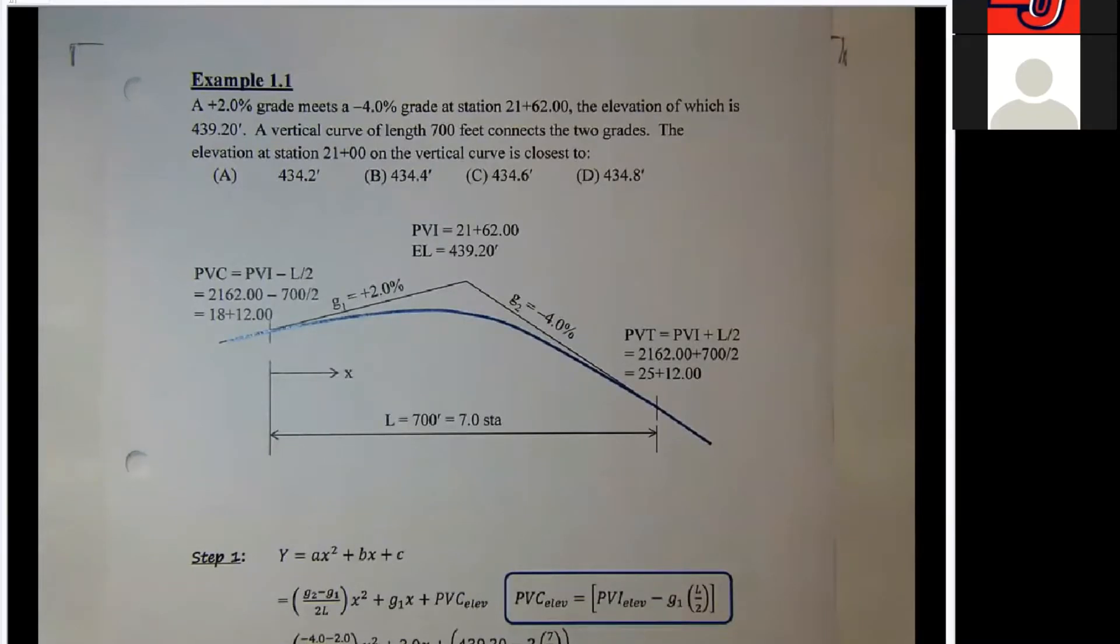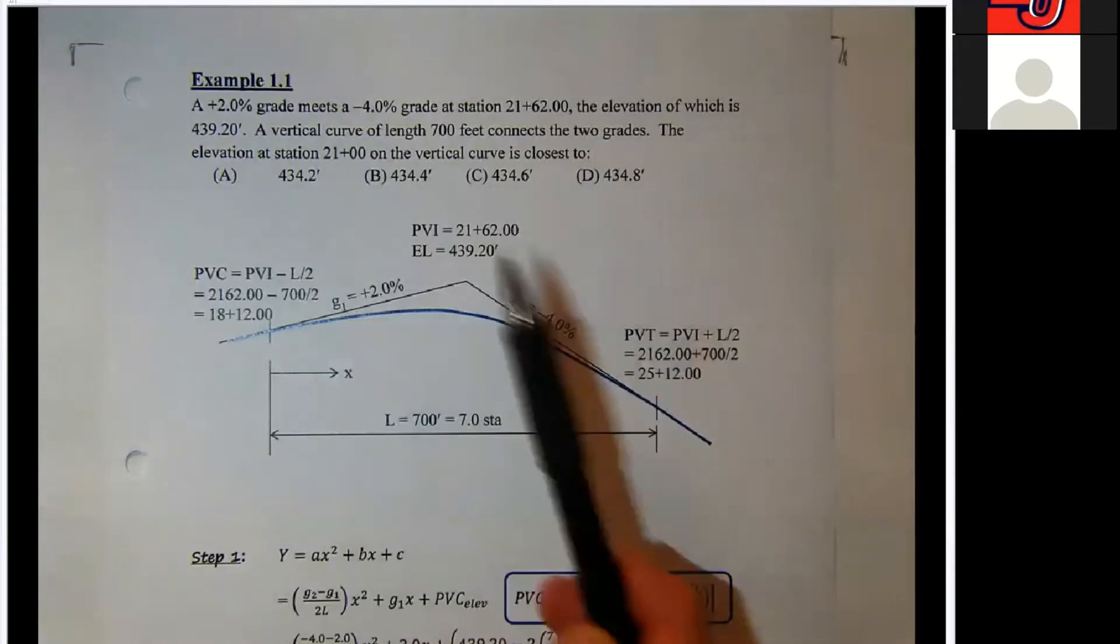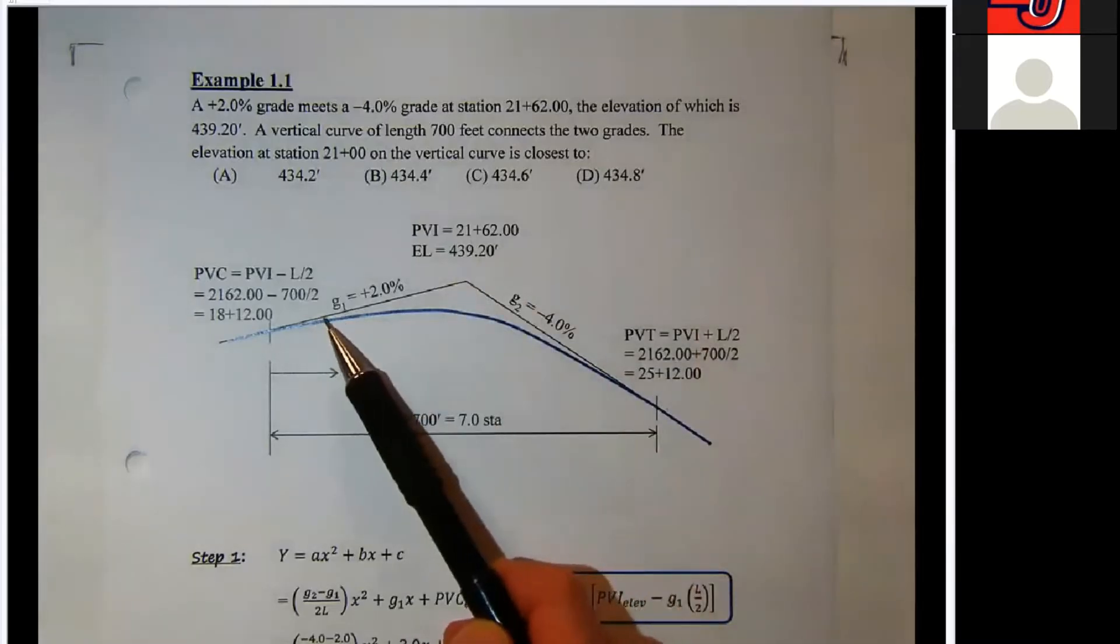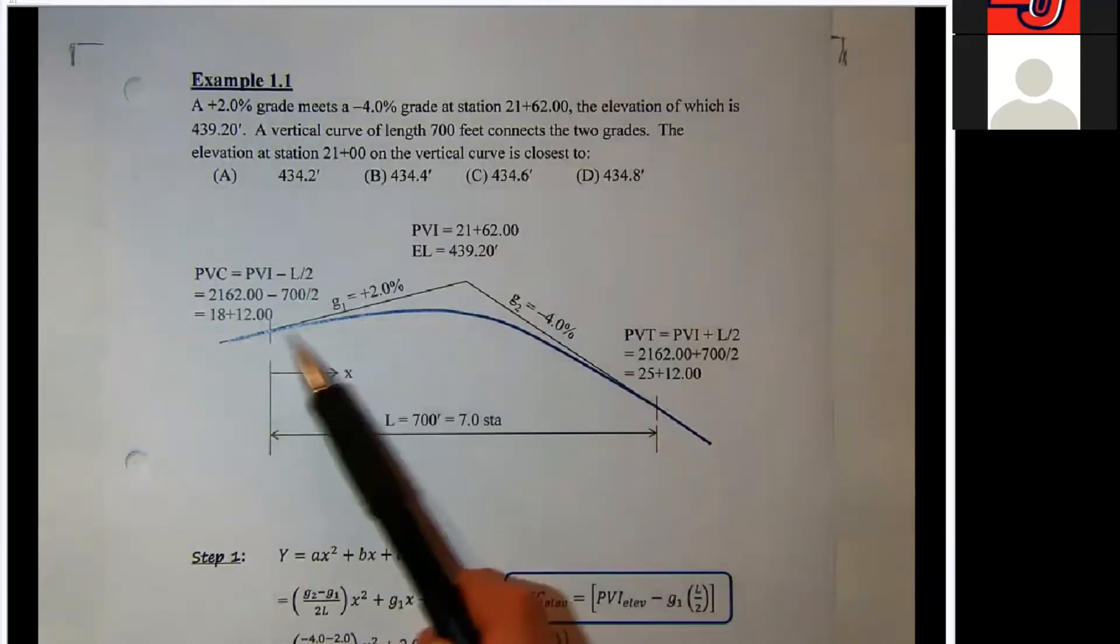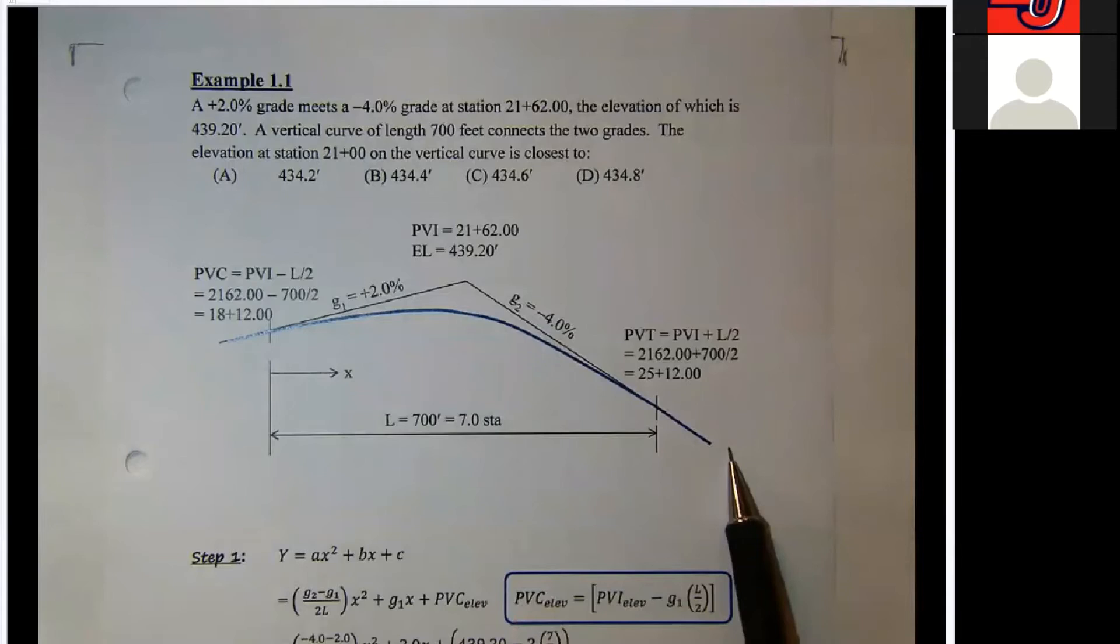So a plus 2% grade meets a minus 4% grade. I find it helpful to sketch these just roughly to scale. If you draw a line up here and you call that 2%, this ought to be twice as steep on the other side.